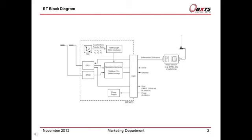Now let's look at the RT block diagram. Here you will see the components in the RT as a block diagram. The accelerometers and angular rate sensors are processed by a high-speed digital signal processor to remove errors caused by vibrations.